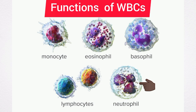Eosinophils play an important role in the defense mechanism of the body against parasites. During parasitic infections, there is production of a large number of eosinophils which move towards the tissues affected by parasites. Eosinophil count also increases during allergic diseases like asthma. Eosinophils are responsible for detoxification, disintegration, and removal of foreign proteins.